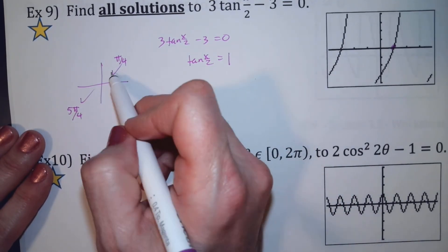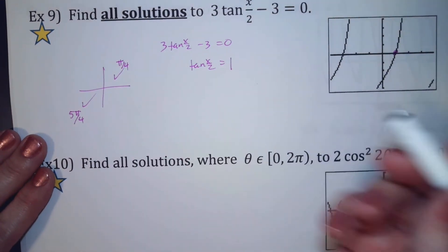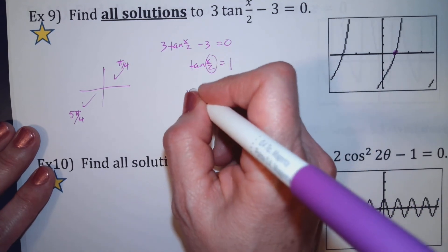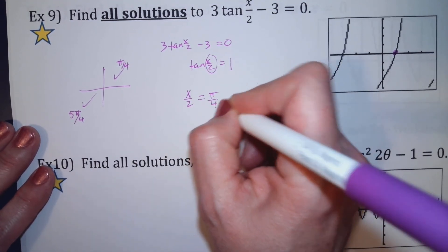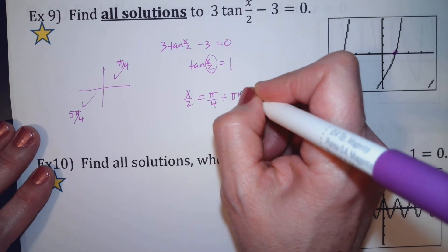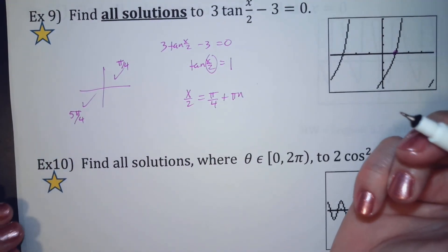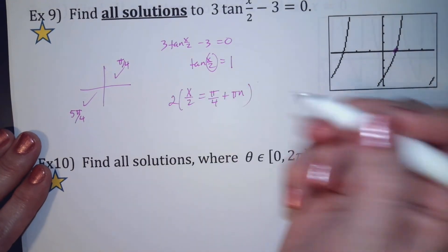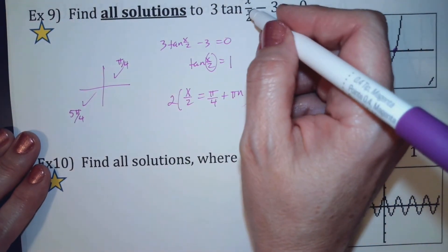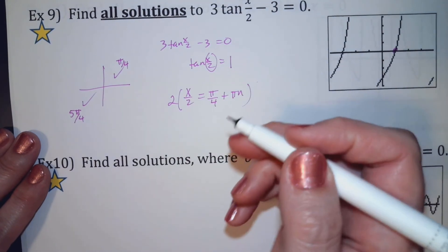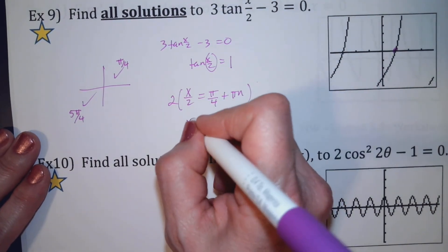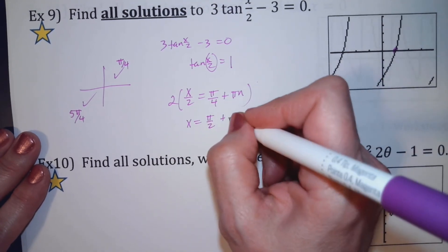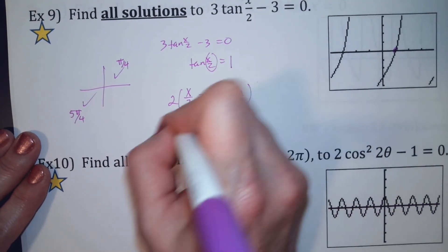This is where you get rid of the 2 by multiplying everything by 2 — because of the period change. So x equals 2 times pi over 4, which is pi over 2, and 2 times pi·n becomes 2pi·n. So x equals pi over 2 plus 2pi·n. You can see this answer is occurring every 2pi. You can't touch the inside argument until the end.